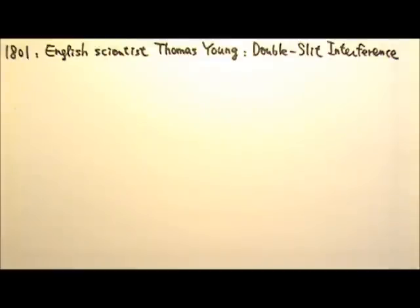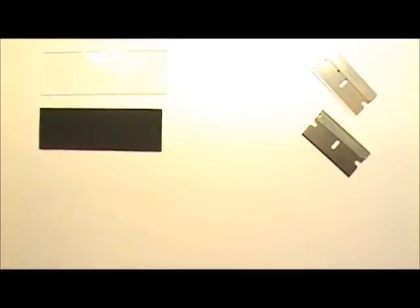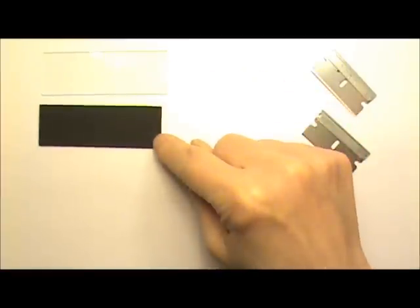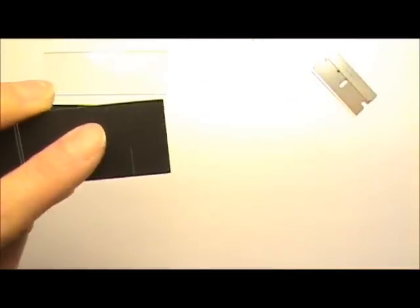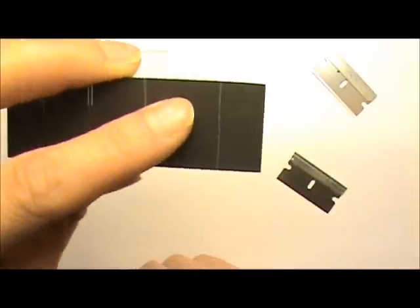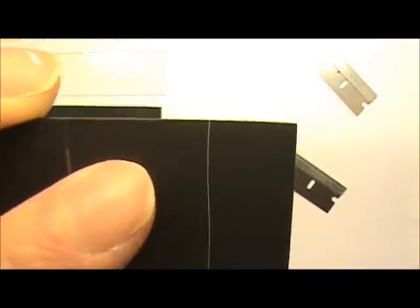Young used some very narrow slits for his experiment. One classic way to make very narrow slits is to paint a small pane of glass black and then use a sharp razor blade to cut away a line of paint to form a single slit like this one.